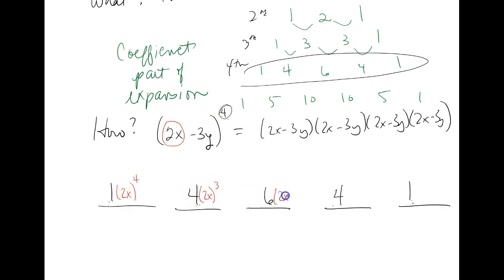So if this is to the fourth, I'm going to start with 2x to the fourth, 2x to the third, and I'm just counting down with exponents, and then 2x to the zero. I'm going to go ahead and write it, but hopefully we all know that 2x to the zero is just 1, so inevitably that will go away, but I'll write it for now.